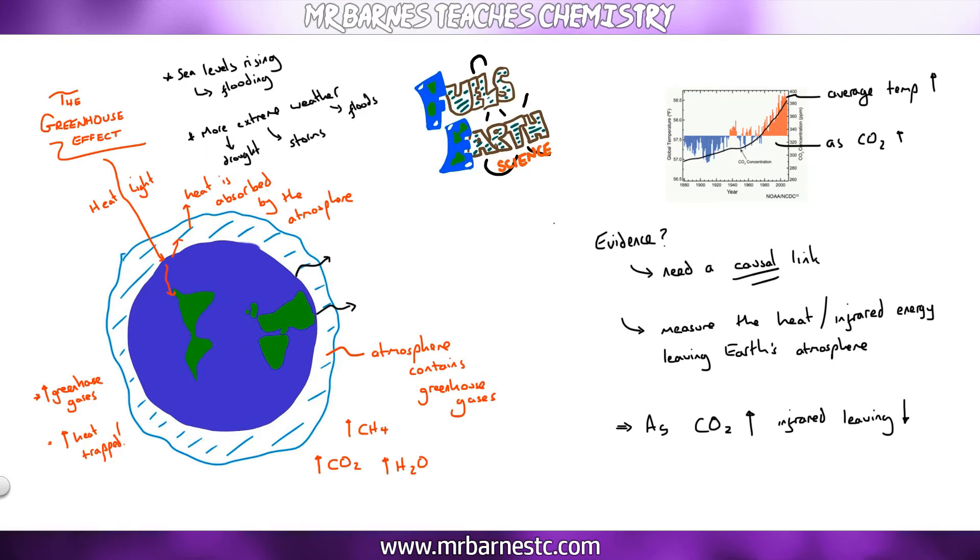You might also be asked how we're putting more greenhouse gases into the atmosphere. Simply, farming increases the amount of methane. Mining, fuels or ores, increases the amount of CO2 and H2O produced. And combustion, CO2 given out.